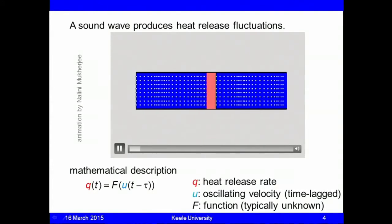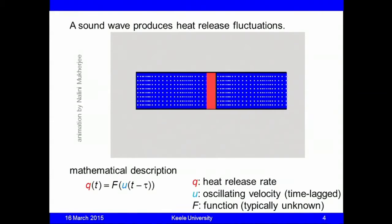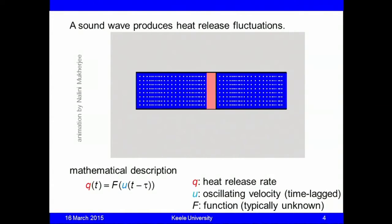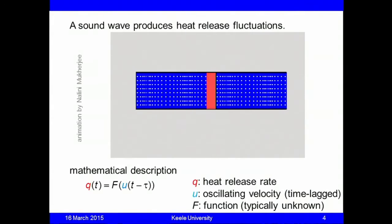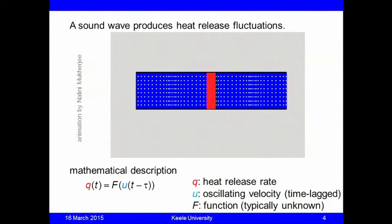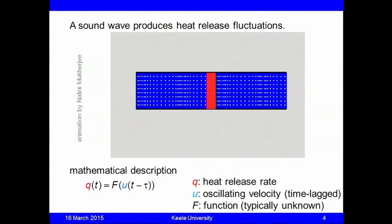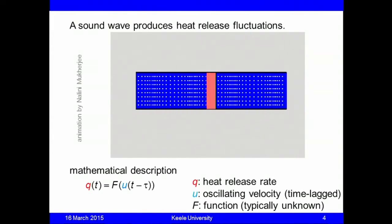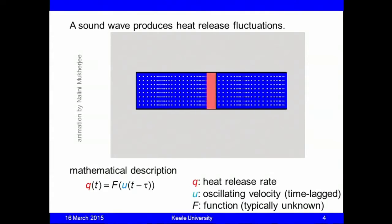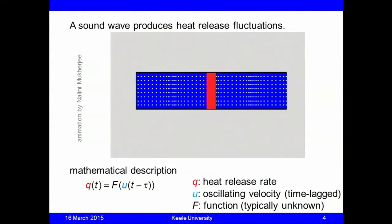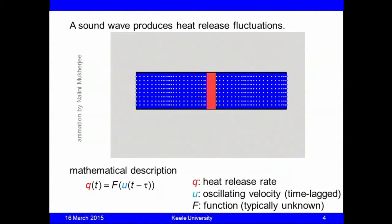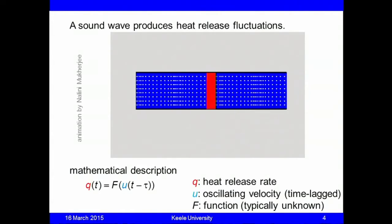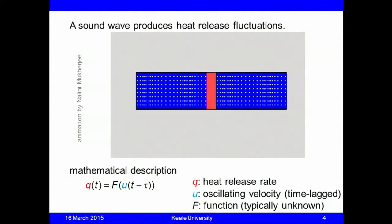The heat source expands and contracts, pushing the fluid particles on either side, and that sets up a wave. The sound wave travels away from the heat source in either direction. This animation shows how a fluctuating heat source can produce a sound wave in the one-dimensional case.